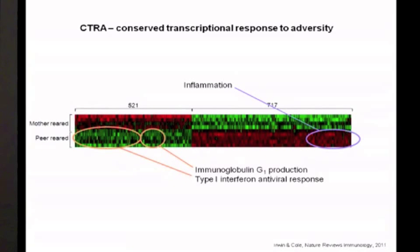We've taken to calling this the Conserved Transcriptional Response to Adversity. Not a very charismatic name, but it actually does capture a couple of things we like, one of them being it seems to be conserved across different kinds of objective social experience and also conserved across maybe some degree of evolution. We can see it as far down as very different mammals.